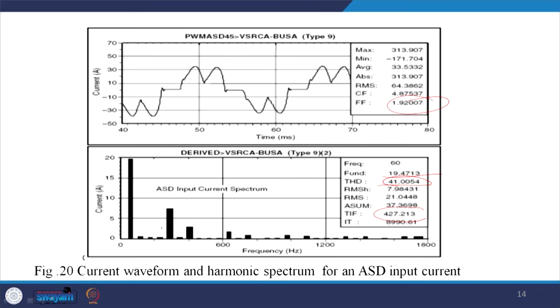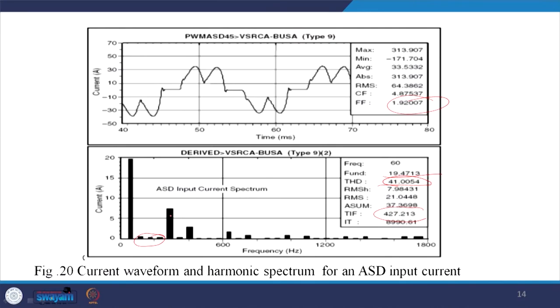The harmonic spectrum shows the fundamental, followed by components that come due to quantization error of sensors and are negligible. Essentially there is a fifth harmonic, a seventh harmonic, then the 11th and 13th harmonics, and so on. This is the harmonic spectrum for an adjustable speed drive.